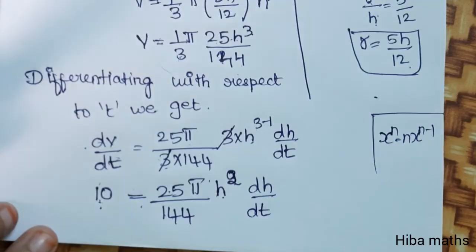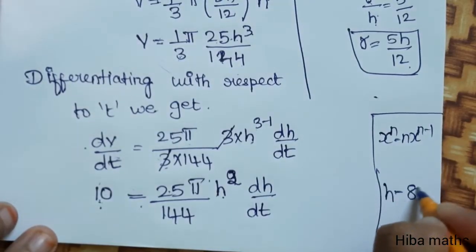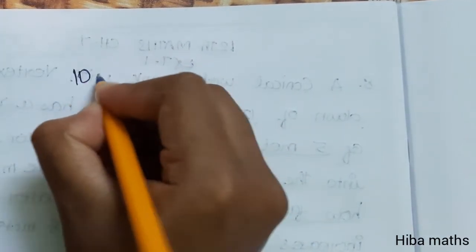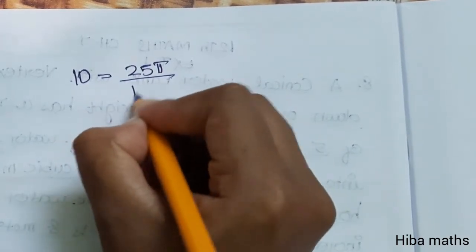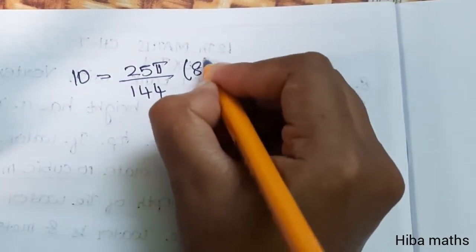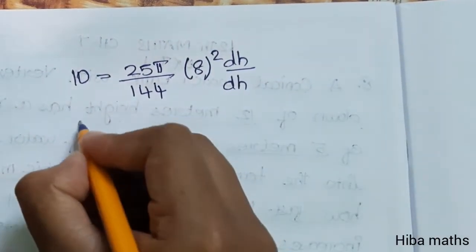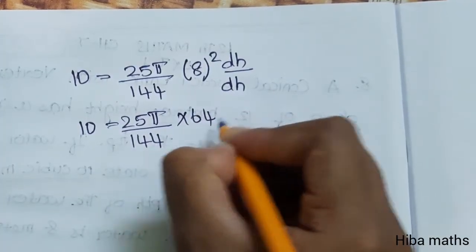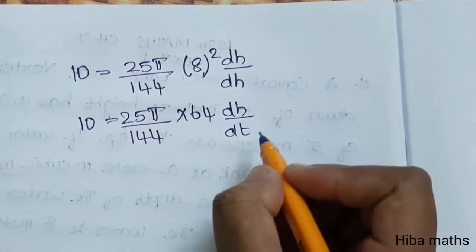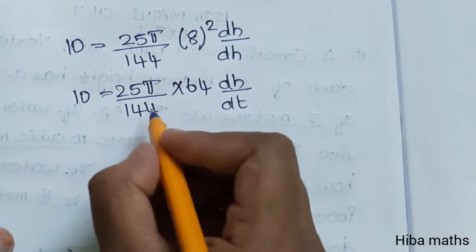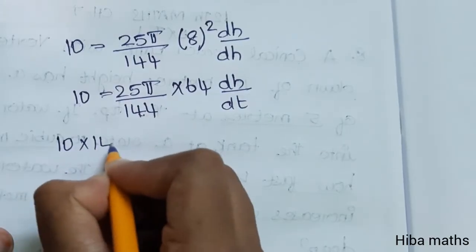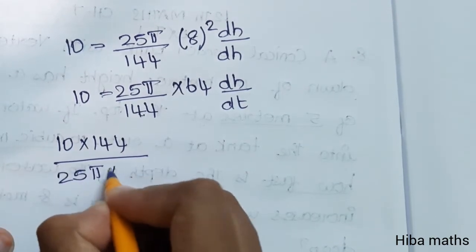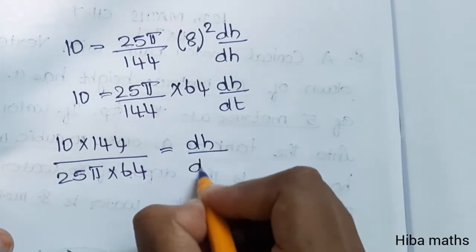In the next step, height is equal to 8 meters, so H = 8. Substituting: 10 = (25π/144) × 8² × dH/dT, which gives 10 = (25π/144) × 64 × dH/dT. Moving terms: dH/dT = (10 × 144) / (25π × 64).